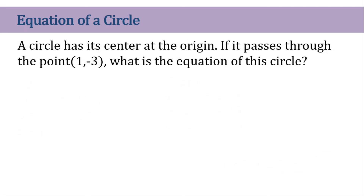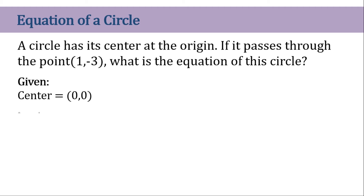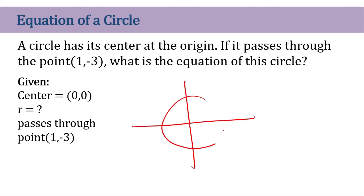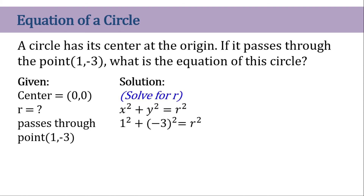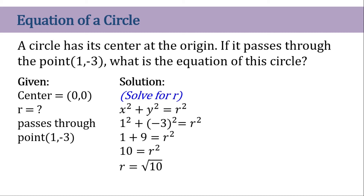Next: a circle has its center at the origin and it passes through the point (1, -3). What is the equation of the circle? The center is at the origin and we don't have the value for r, but we know the circle passes through (1, -3). If we get the distance from the center to this point, we get r. Substituting x = 1 and y = -3 into the circle equation: r² = 1² + (-3)² = 1 + 9 = 10, so r is equal to the square root of 10. Now we can write the circle equation.